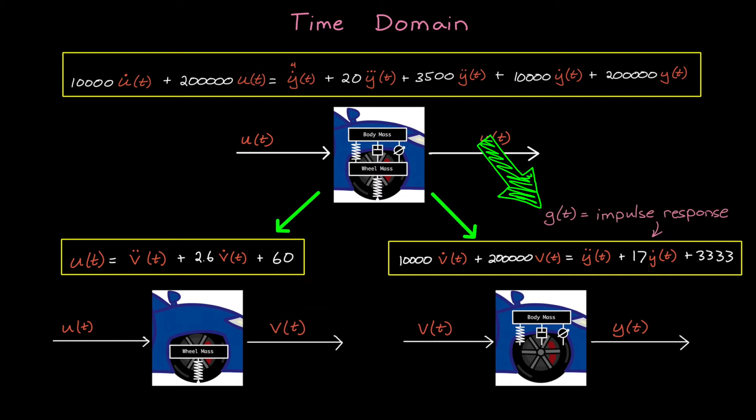we would have to solve for the response of the first differential equation, v, and then convolve it with the impulse response of the second differential equation, which I'm calling g. And the convolution integral is a rather math-heavy operation.